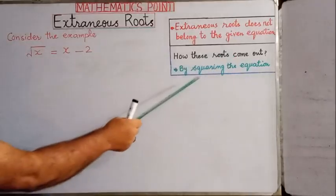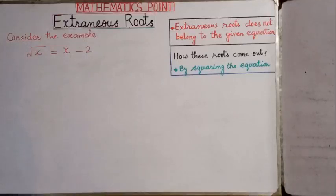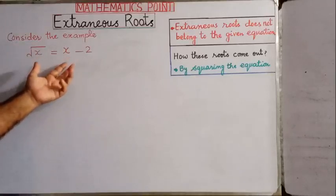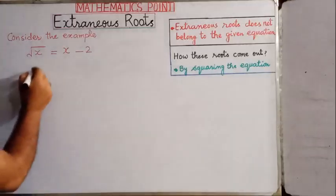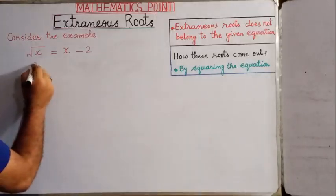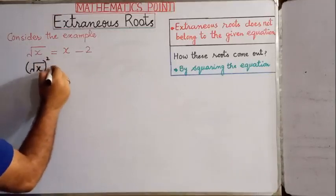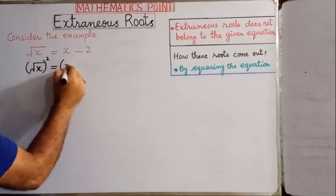If we square both sides of the given equation, our first step is to take the square on both sides of this equation. We have square root of x, and taking the square is equal to now taking the square of x minus 2 on the right hand side.